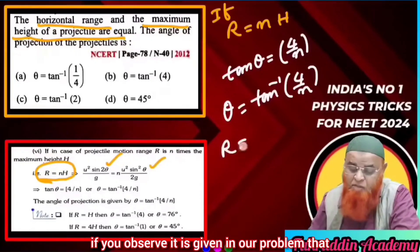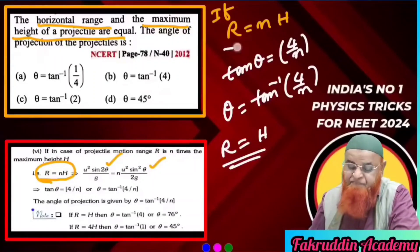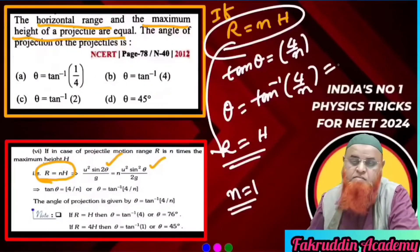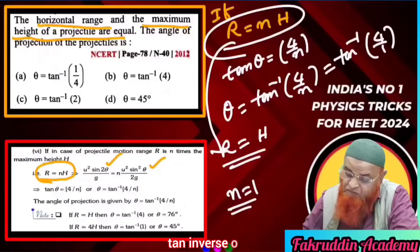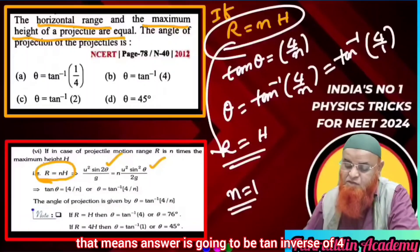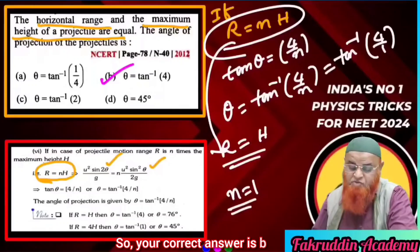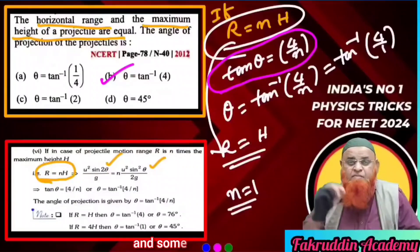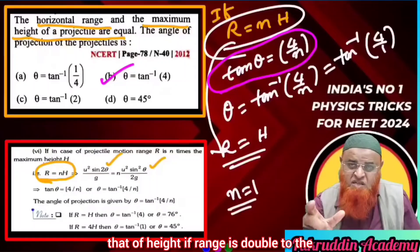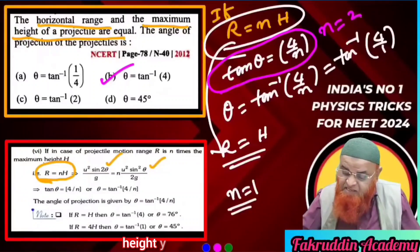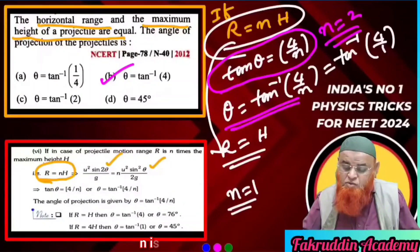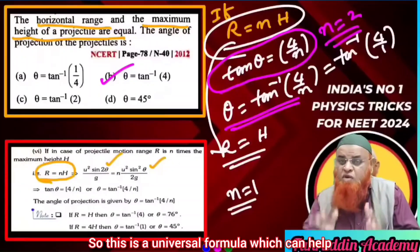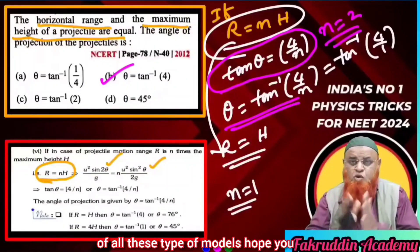In our problem, it is given that range and height are going to be the same — that means n = 1. So our answer is tan⁻¹(4/1) = tan⁻¹(4), which is option B. This is a universal formula. Sometimes he says range is double the height — then n = 2, giving theta = tan⁻¹(2). Hope you have enjoyed this shortcut.